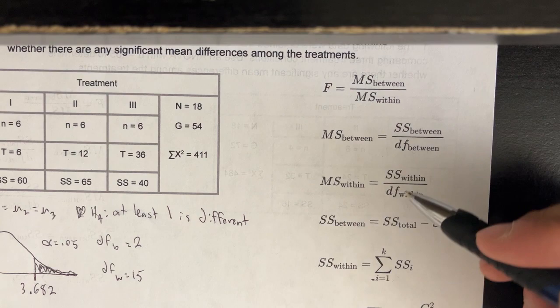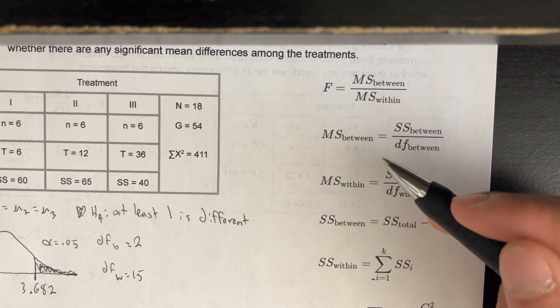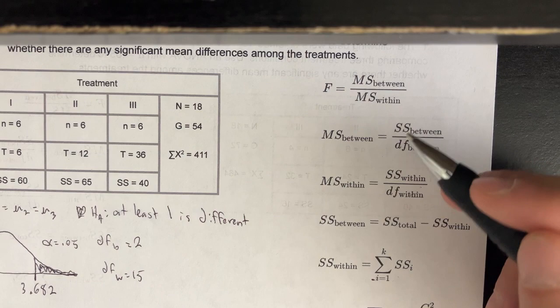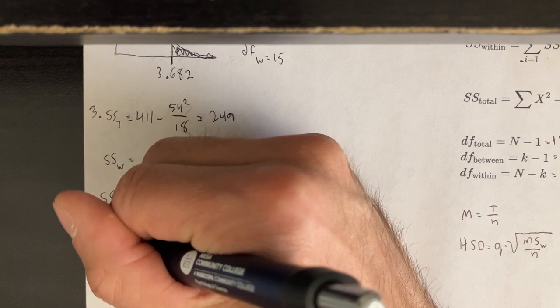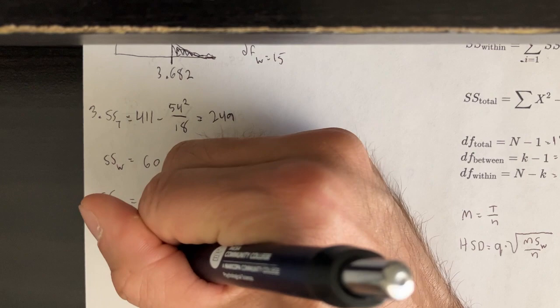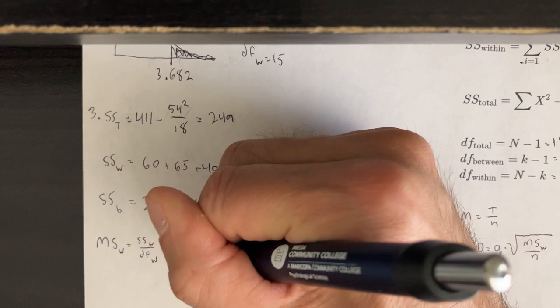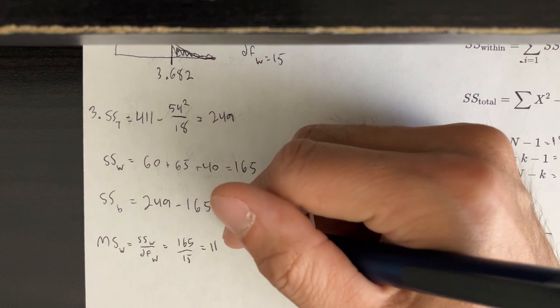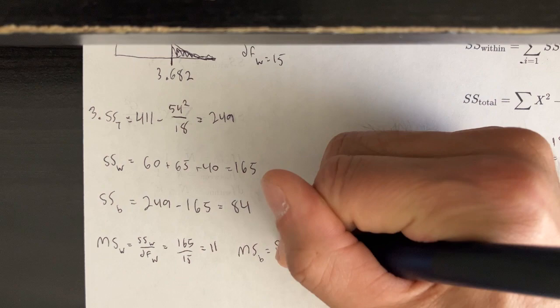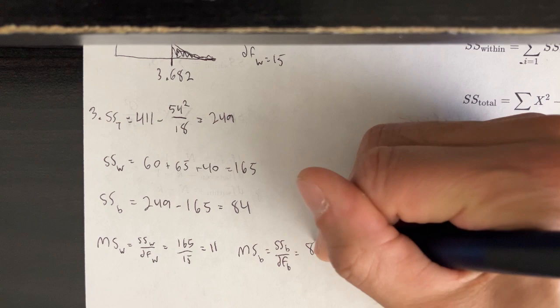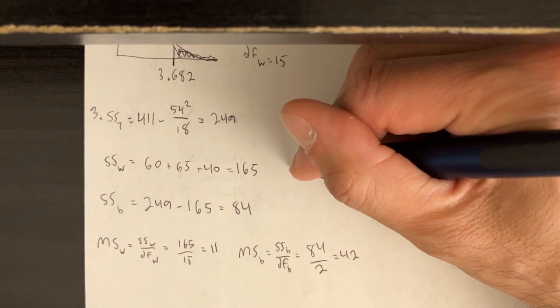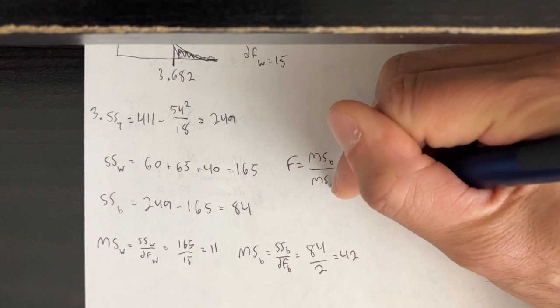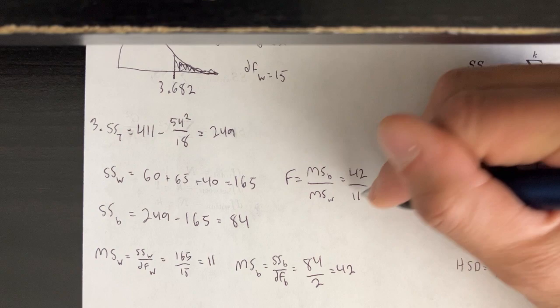Now we've done all the heavy lifting. We have all the components for the mean squares. Mean squares within is SS within over degrees of freedom within: 165 over 15, which gives us 11. Mean squares between is SS between over degrees of freedom between: 84 over 2, which is 42. Our final F statistic is MS between over MS within: 42 over 11, giving us approximately 3.82.